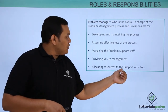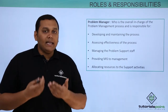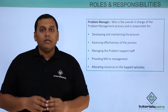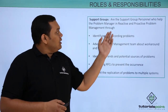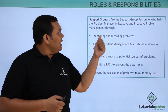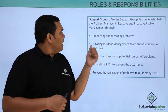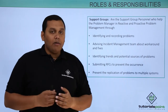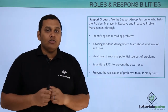Allocating resources to supporting activities — the problem manager is the person who allocates resources for the support team. The support groups are the personnel who help the problem manager in reactive and proactive problem management through identifying and recording problems, and advising the incident management team about workarounds.